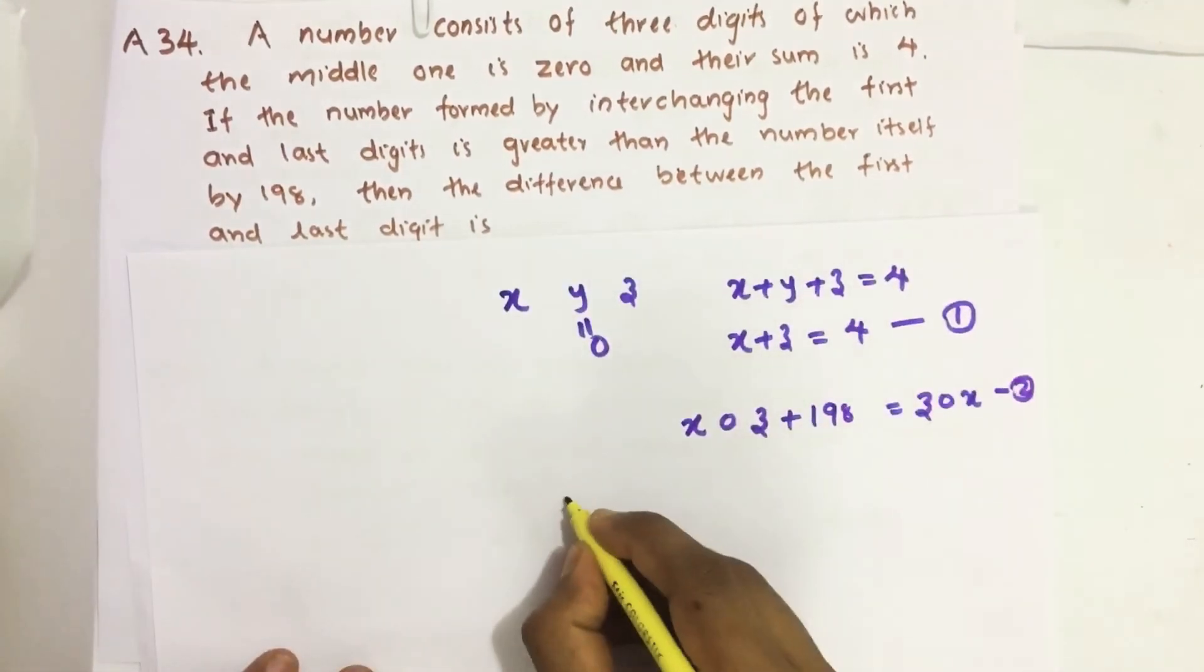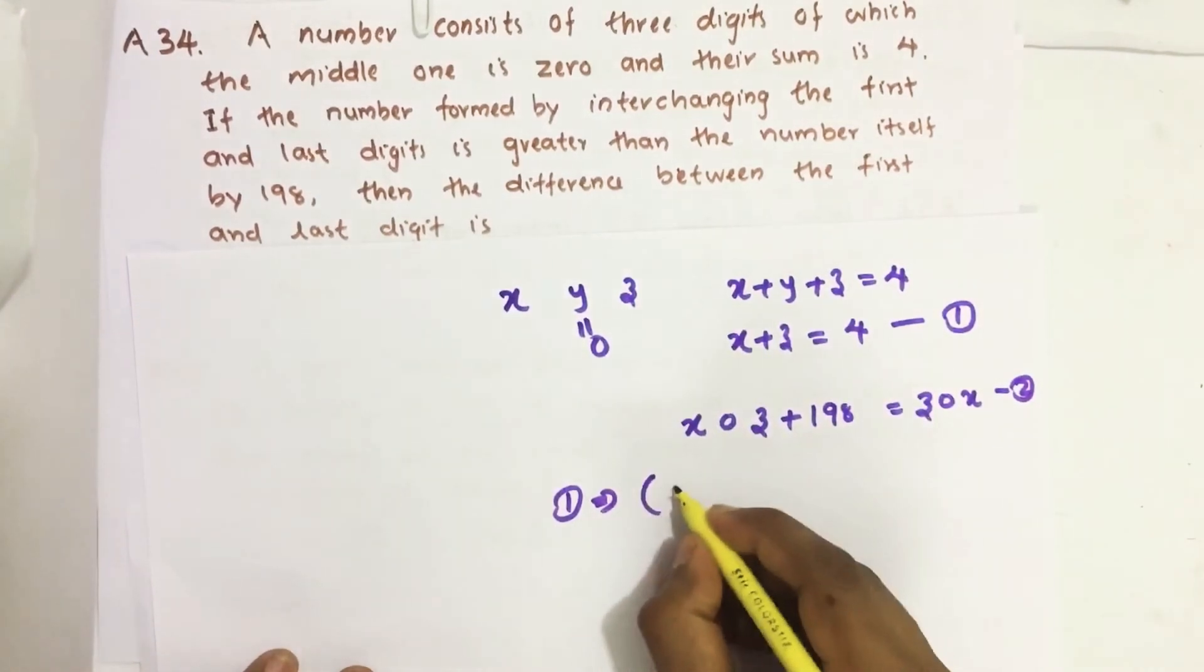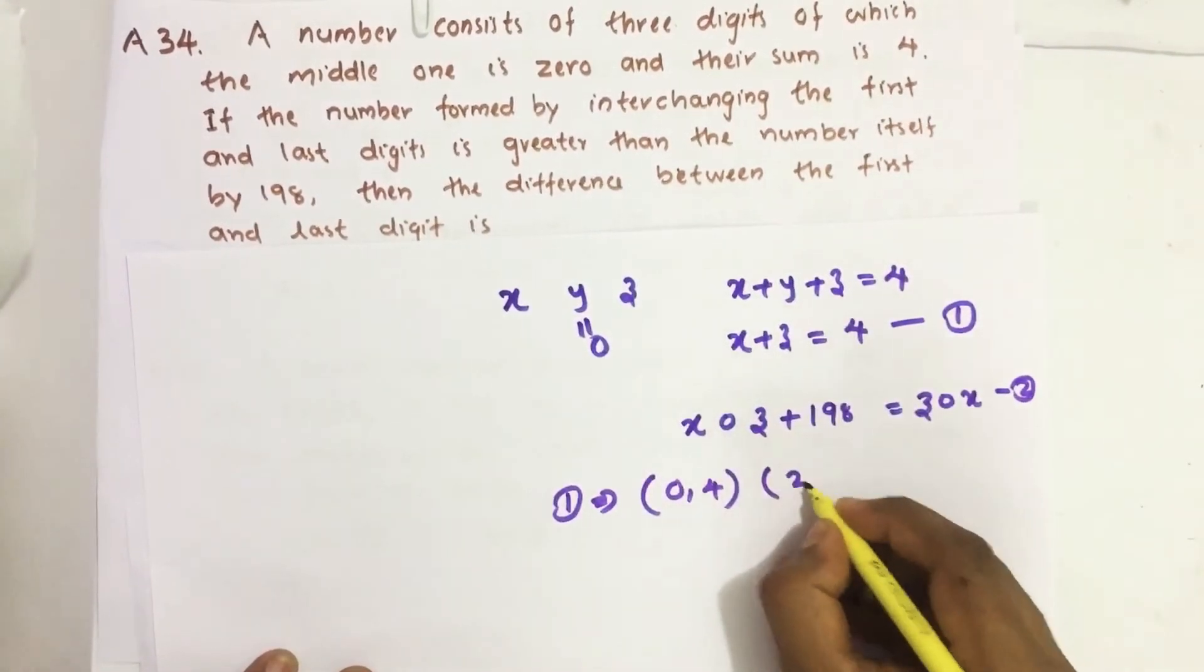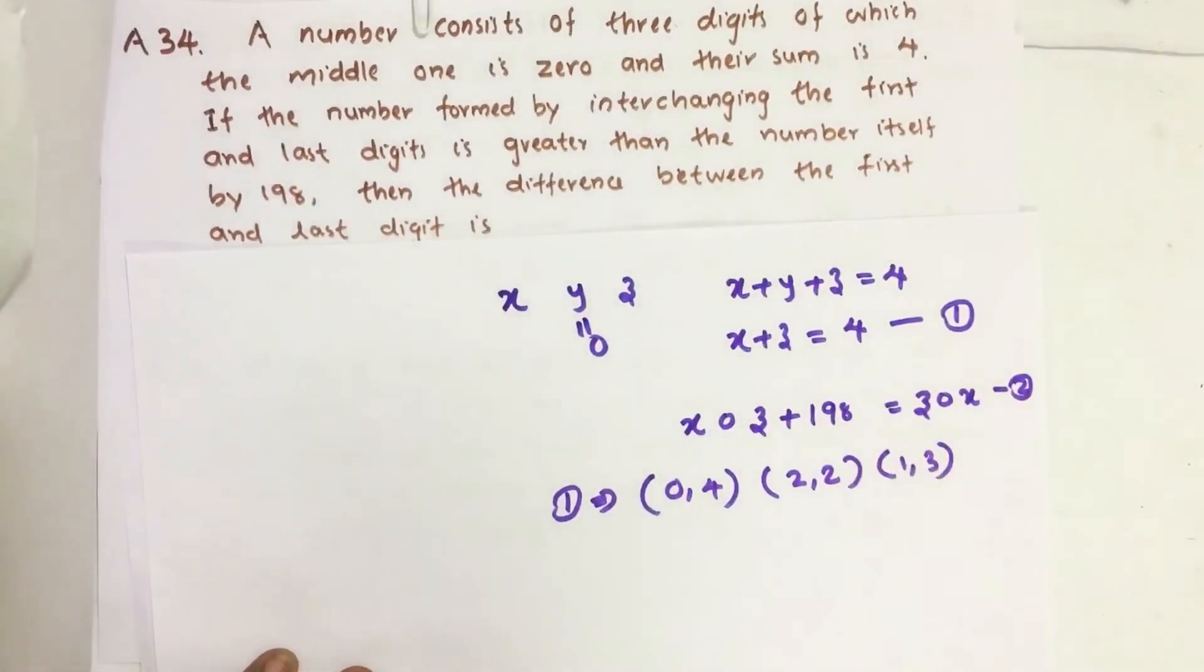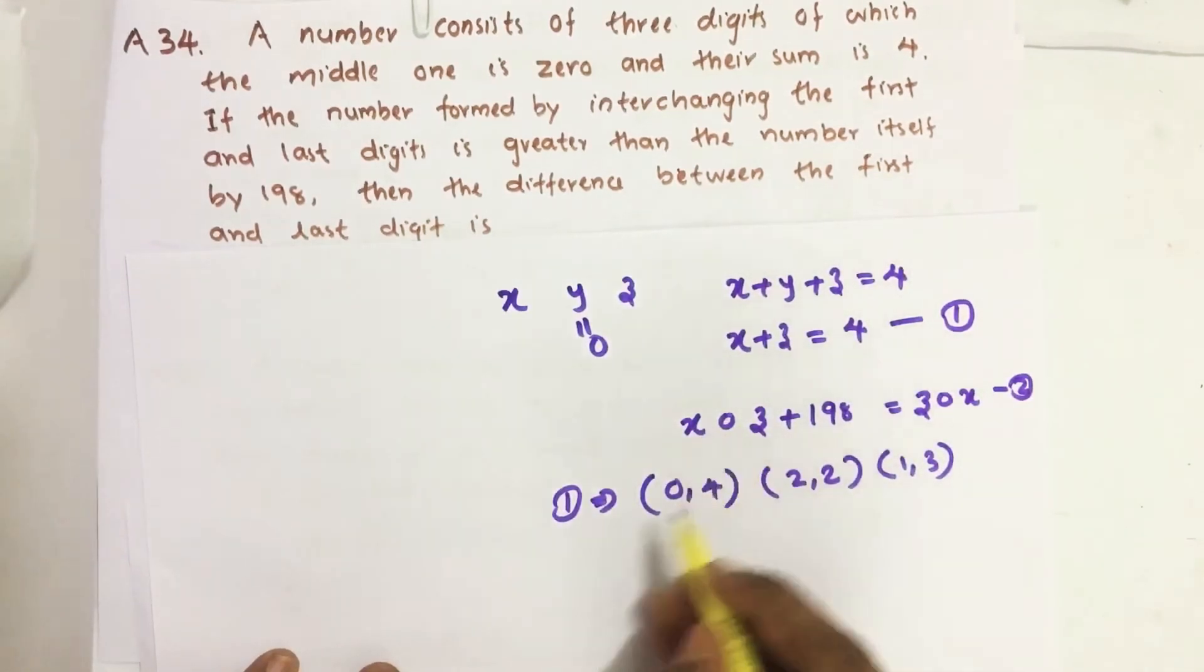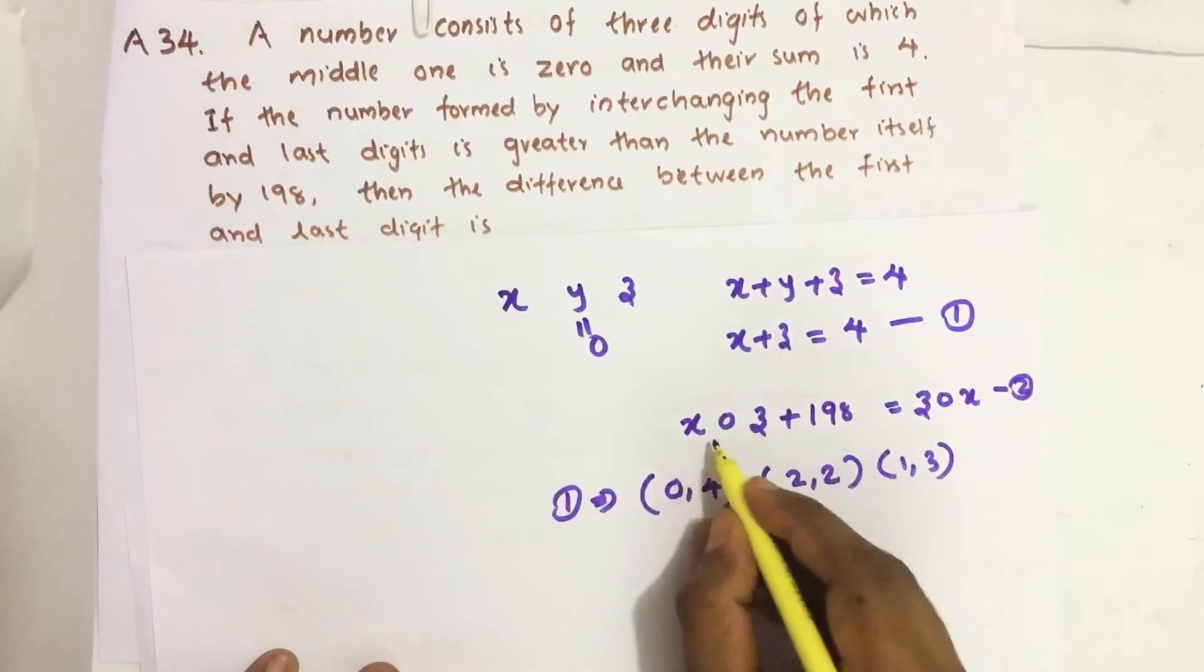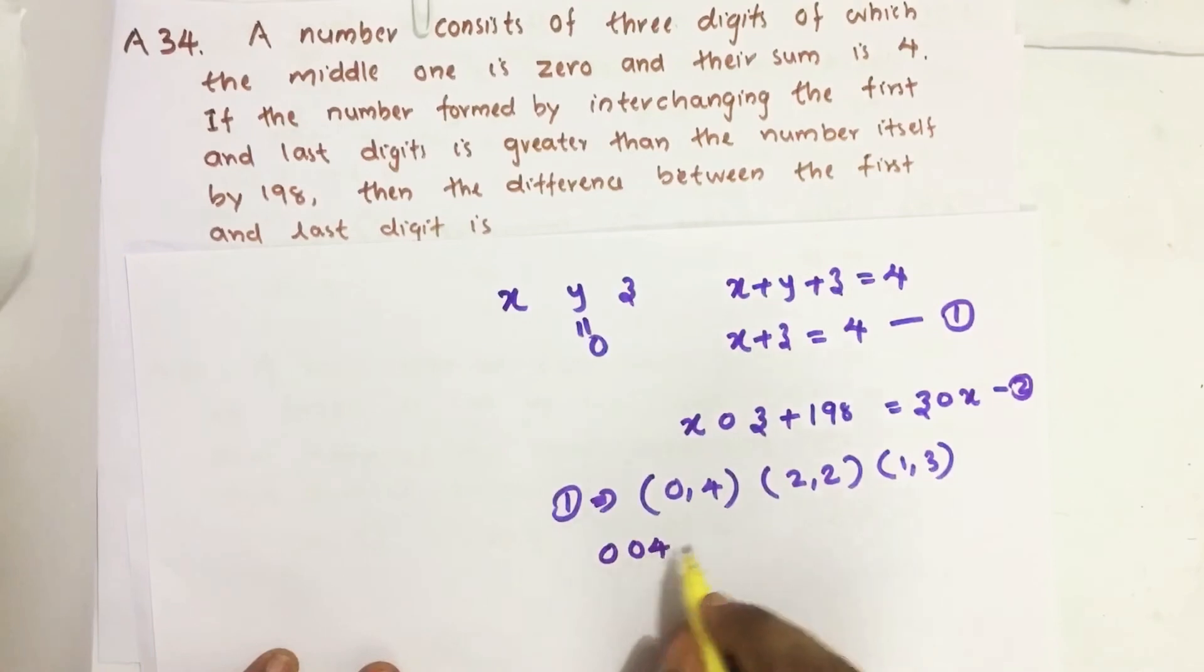From the first equation, we know possible combinations are (0, 4), (2, 2), and (1, 3). Now, let us put each combination in equation 2 and find whether it is possible or not. First, we are putting 0 and 4. If we put 0 and 4 instead of x and z, we get 004. This is a single digit number, so this is not our answer.